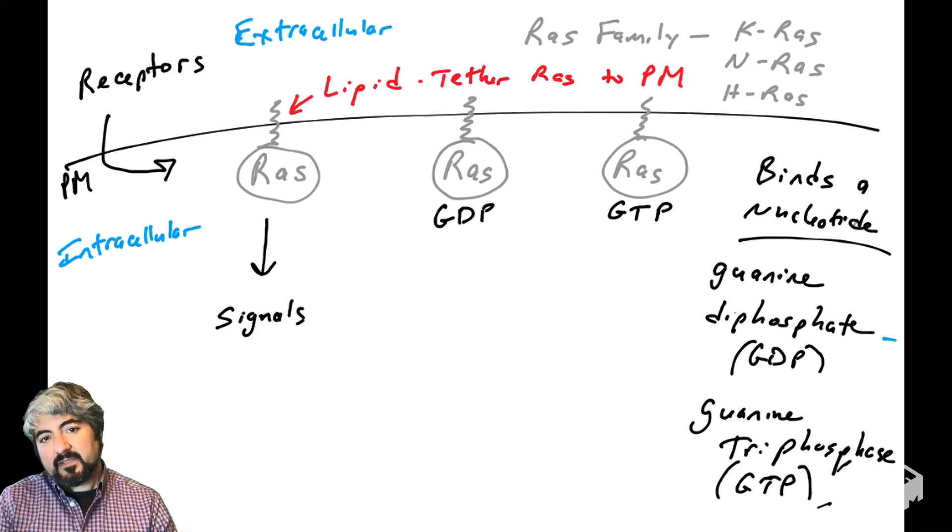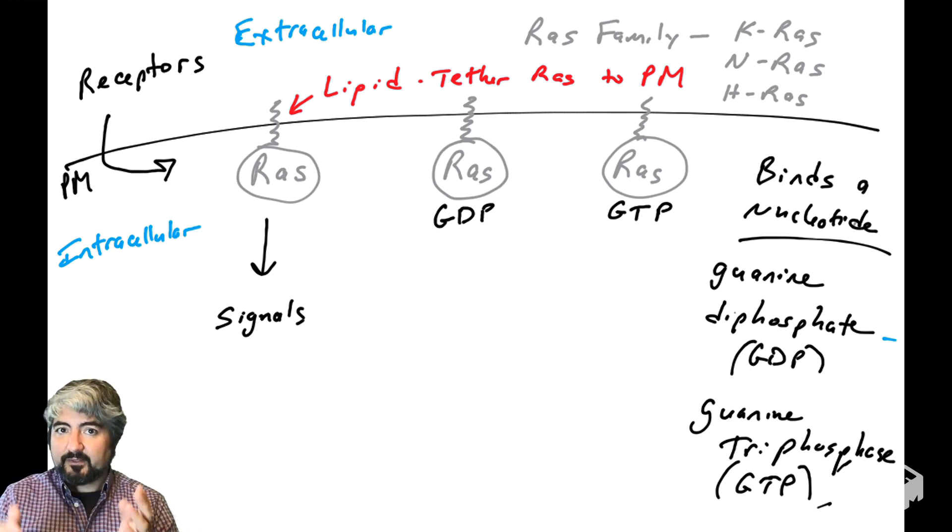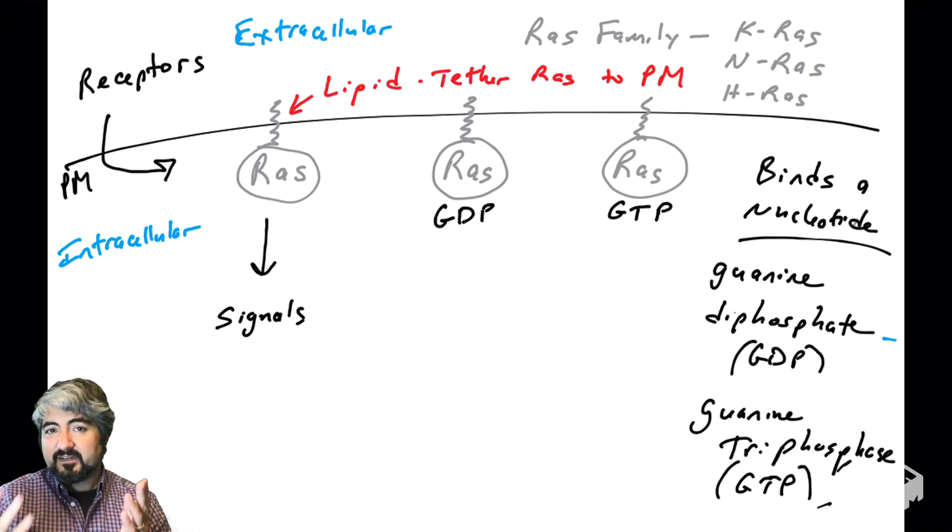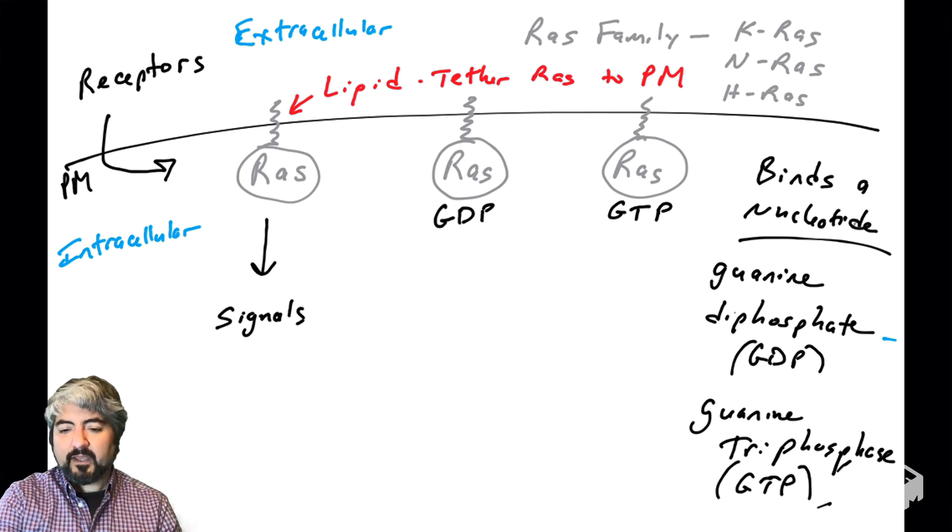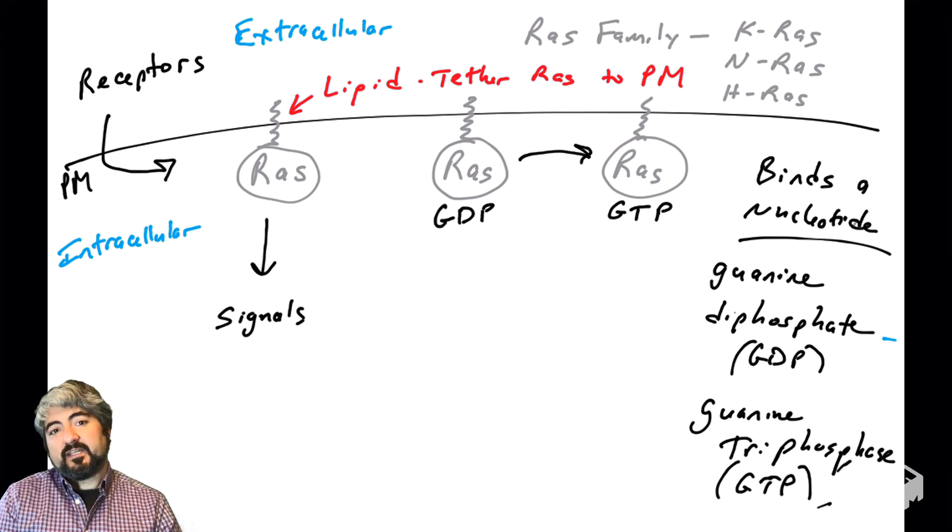Maybe you've heard of G proteins. What are G proteins? G proteins are proteins that have these interactions with guanine nucleotides.